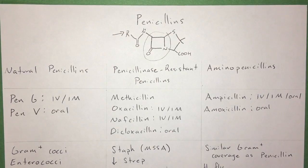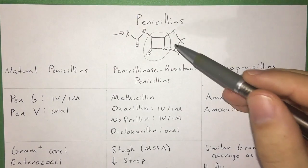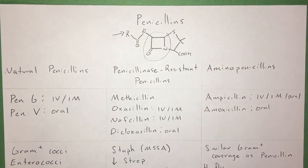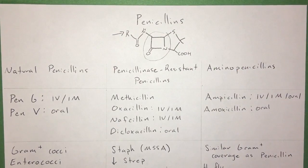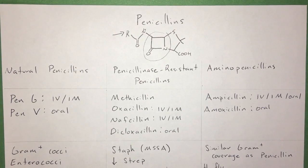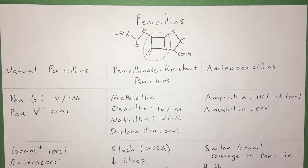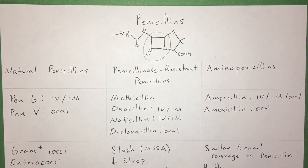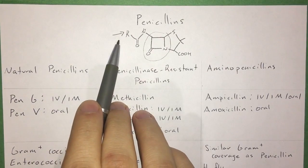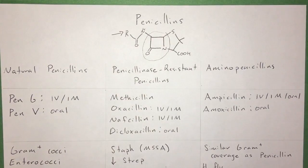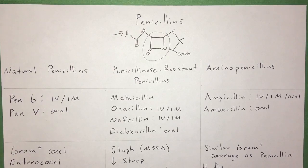One thing that they all have in common in their structure is going to be the beta-lactam ring. What they don't have in common, though, is this R group, and this is the way that they were able to get around resistance.